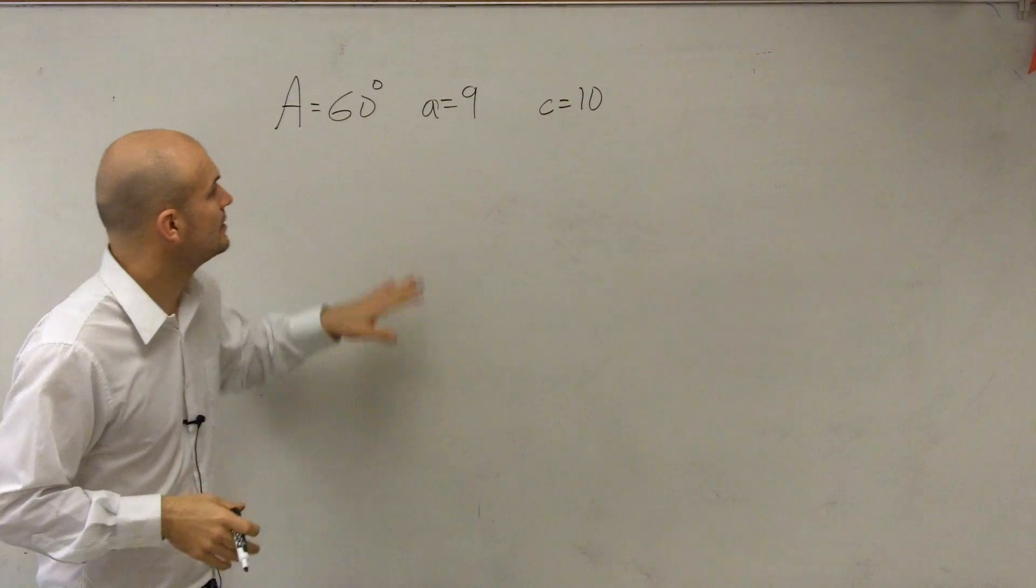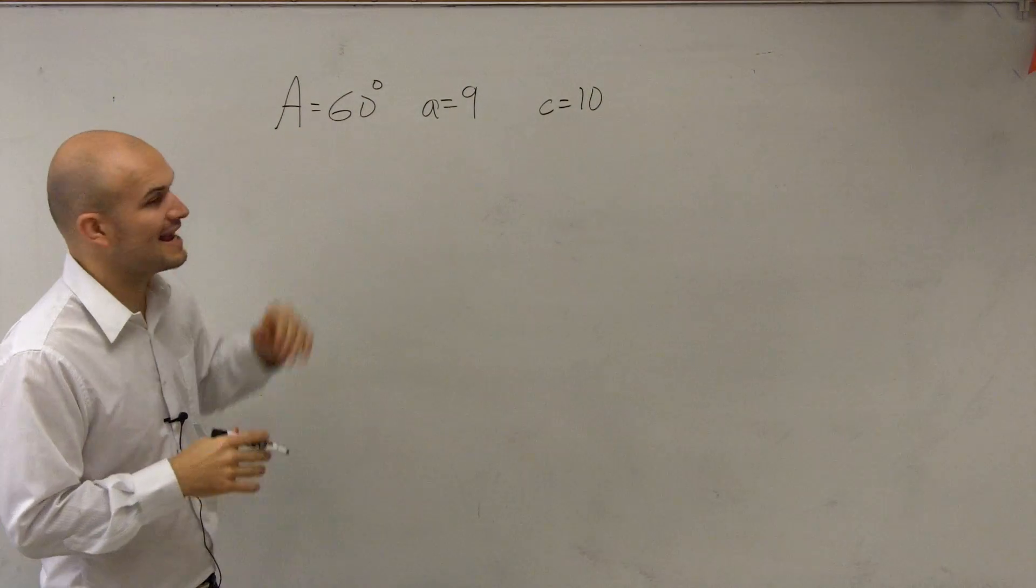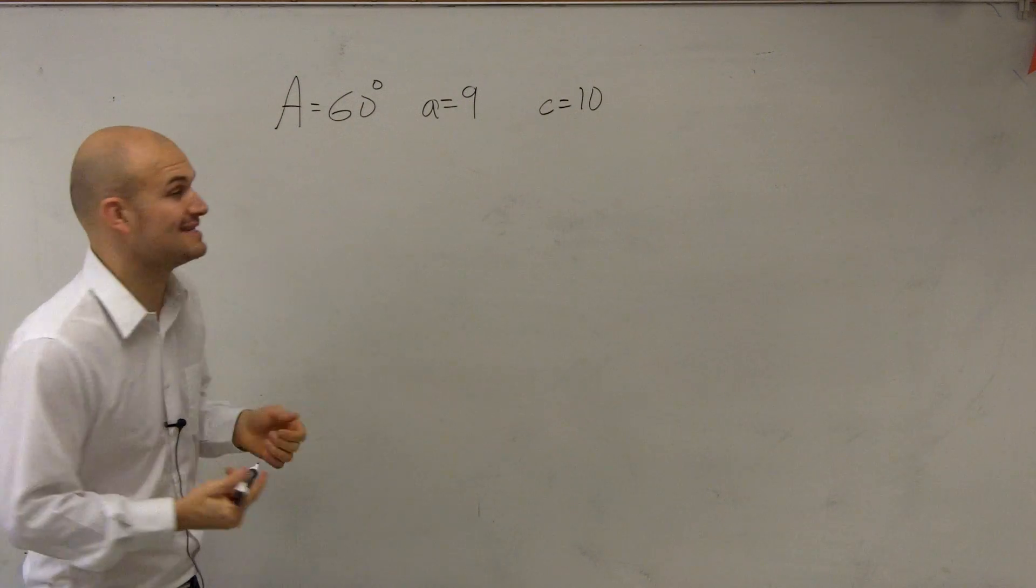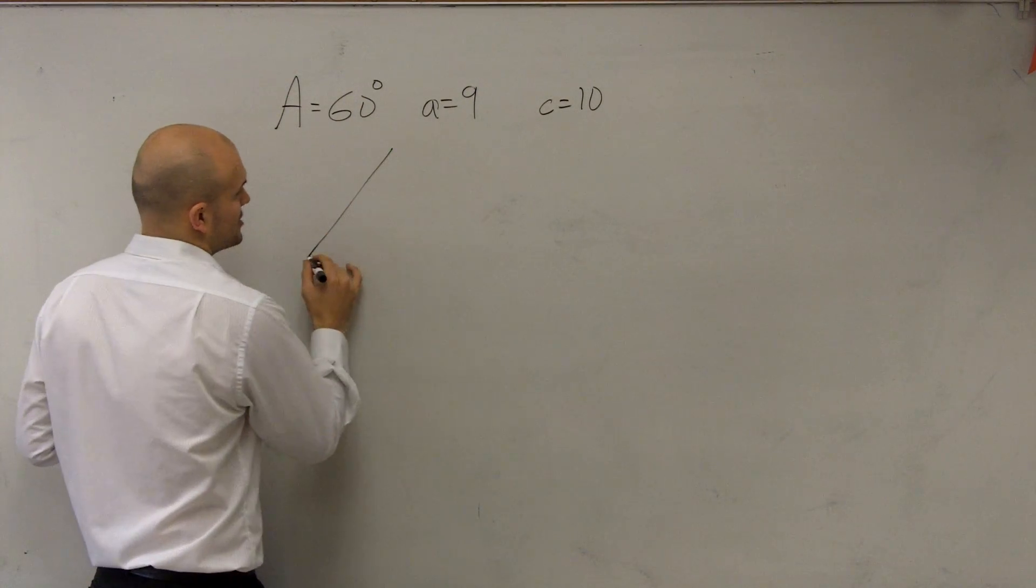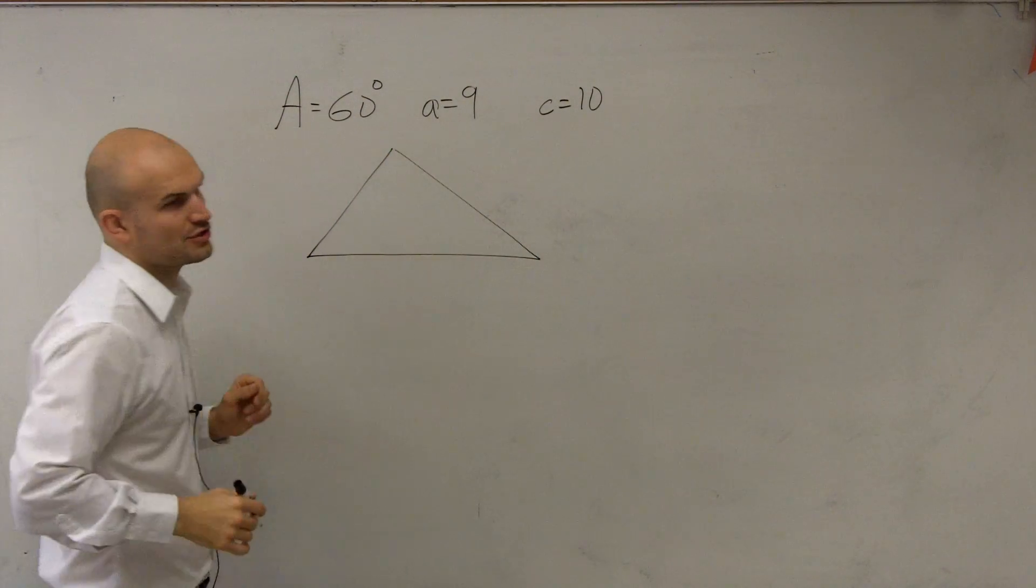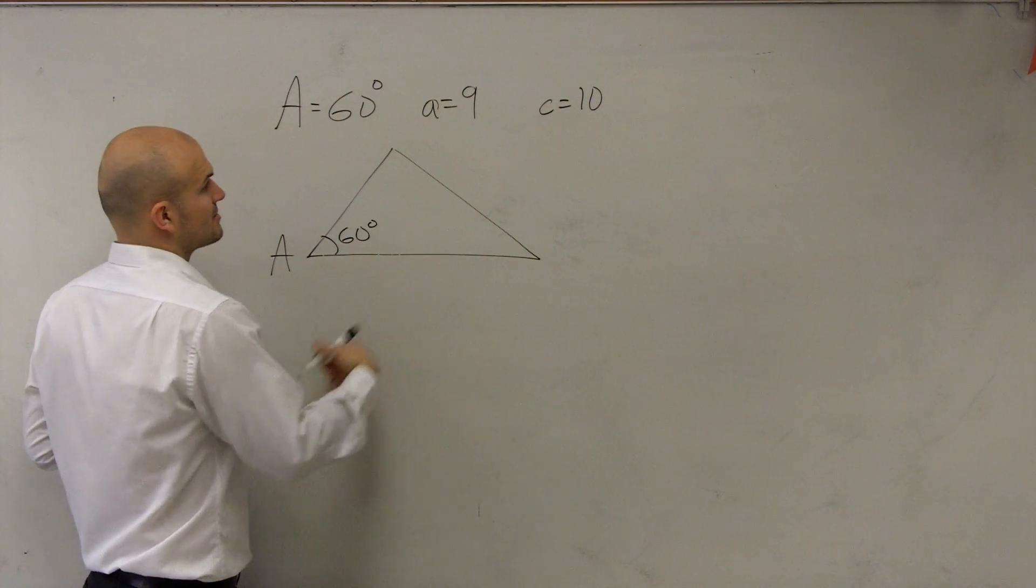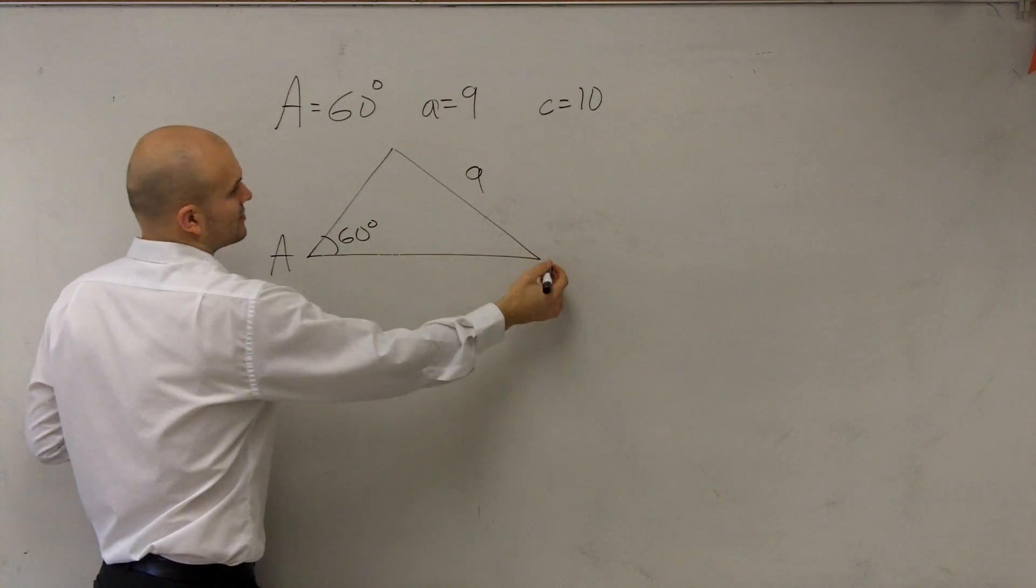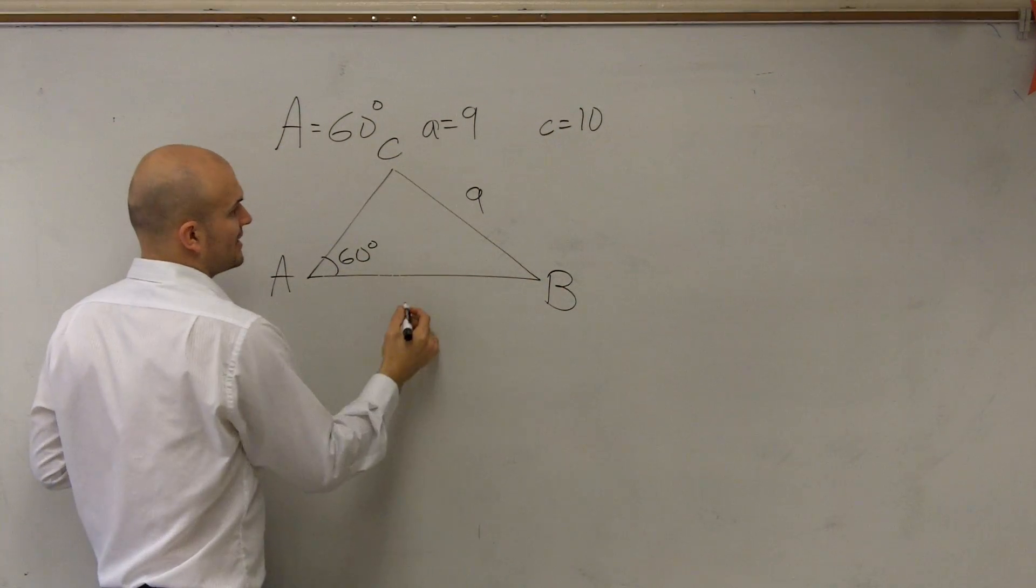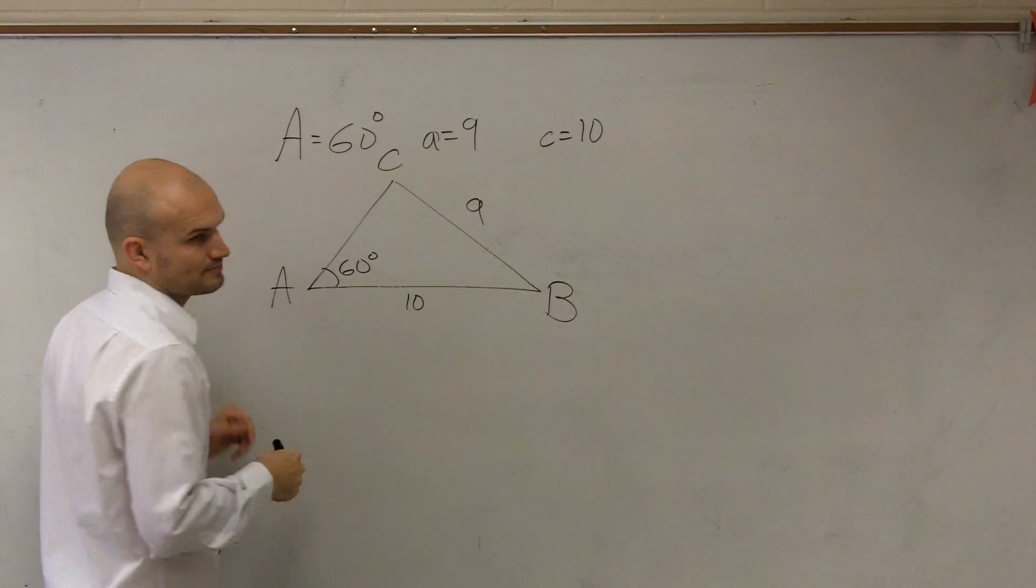Let's just go through this problem real quick. So in this problem, what I have is A equals 60 degrees, a equals 9, and c equals 10. So what I'll do is I'll just create a triangle here, kind of see what it looks like. 60 degrees, a equals 9. We'll say here's b, here's c, so c is going to be 10.